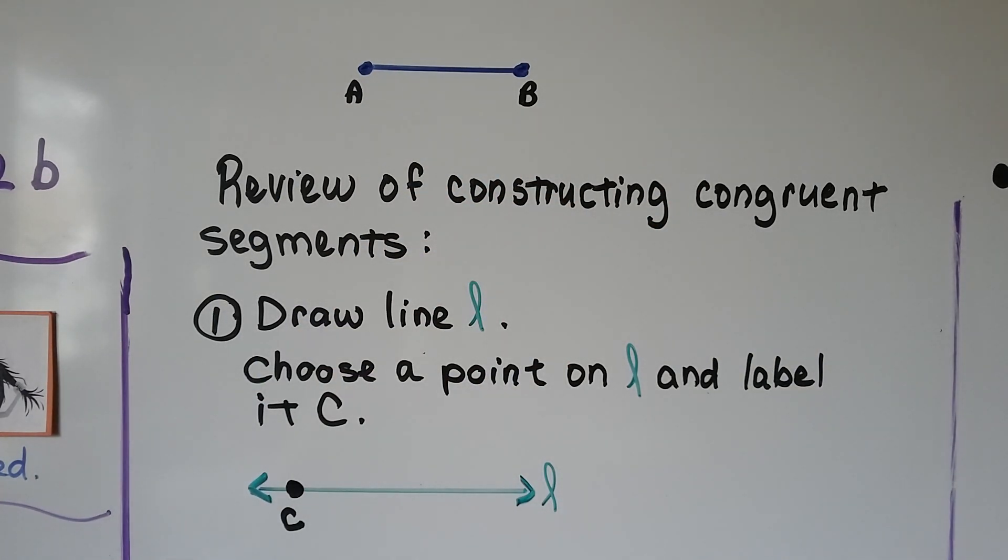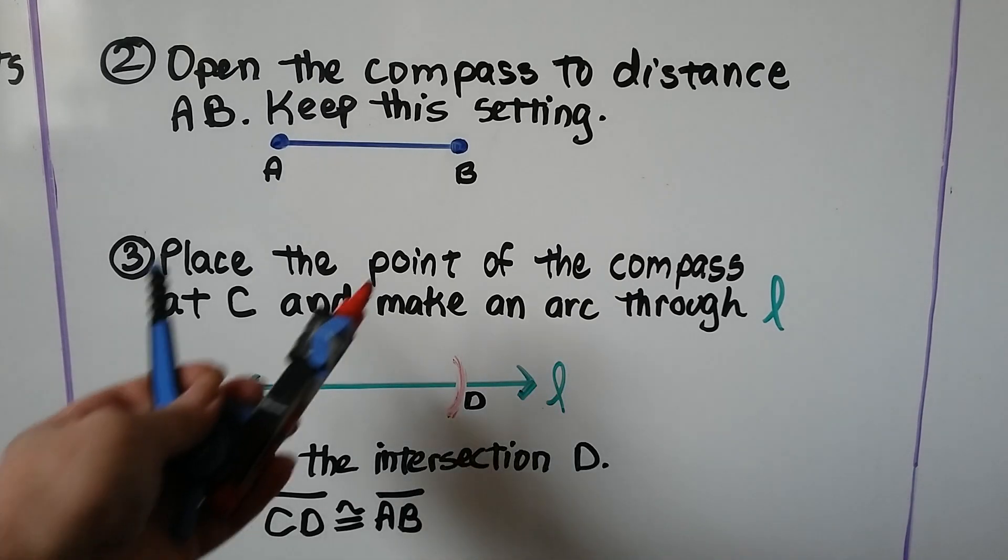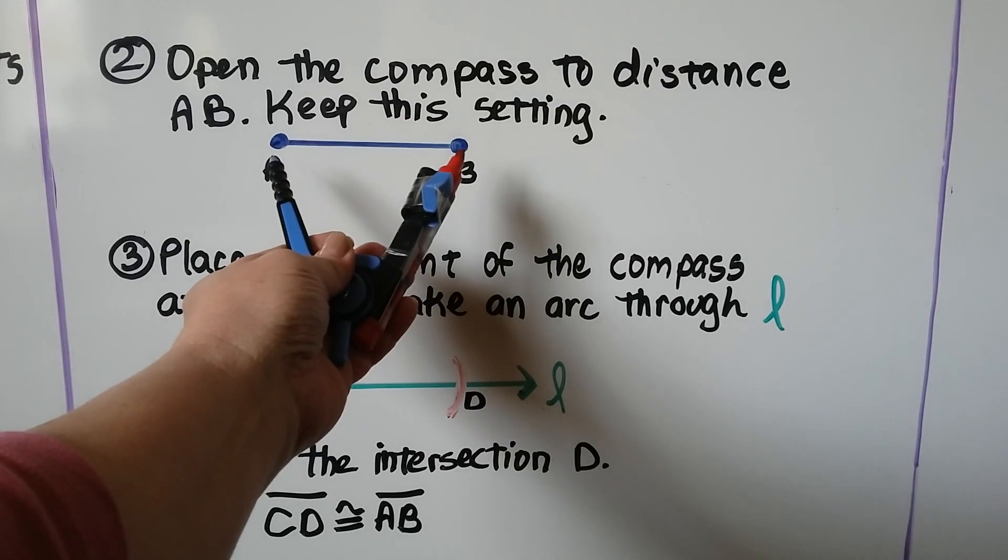The first thing we do is draw a line L. And we choose a point on L and label it C, like this. Then we open the compass to the distance of AB. We keep this setting.